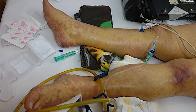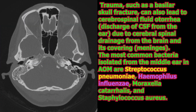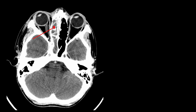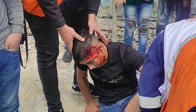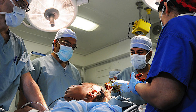Hematogenous spread — infection through the blood vessels — is the most common way that the central nervous system becomes infected. The second method is direct spread from an infected site: extension of an infection contiguous with the CNS, for example, infection of the middle ear or sinusitis. The third method involves anatomical defects in CNS structures: surgery, trauma, or congenital abnormalities can allow microorganisms easy access to the CNS.